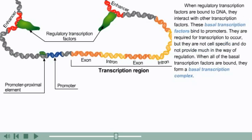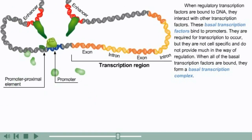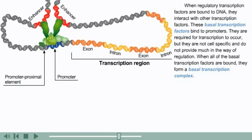When regulatory transcription factors are bound to DNA, they interact with other transcription factors. These basal transcription factors bind to promoters. They are required for transcription to occur, but they are not cell-specific and do not provide much in the way of regulation. When all of the basal transcription factors are bound, they form a basal transcription complex.